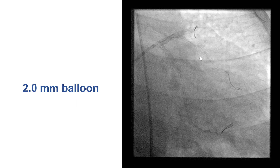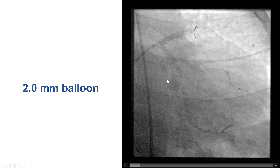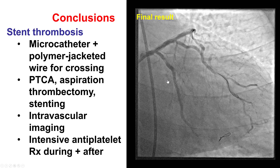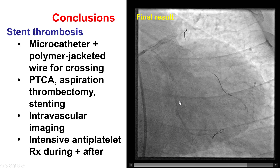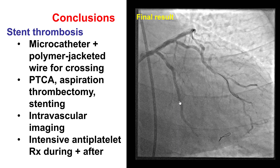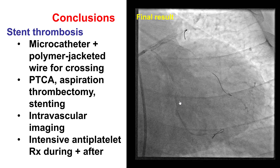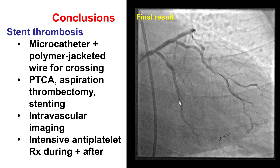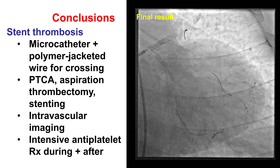Getting flow into the circumflex was more challenging. We performed several rounds of aspiration thrombectomy and did imaging — the stent was expanded, with some remaining intraluminal filling defects, but there was some antegrade flow. After multiple attempts, we decided to stop the procedure. The patient had marked improvement of chest discomfort during the procedure.